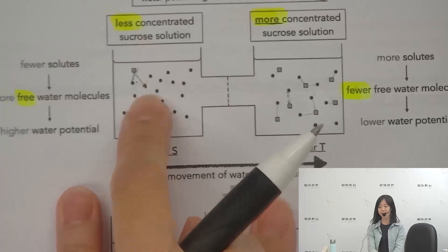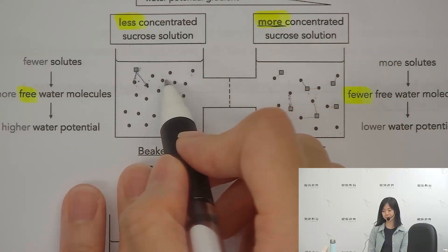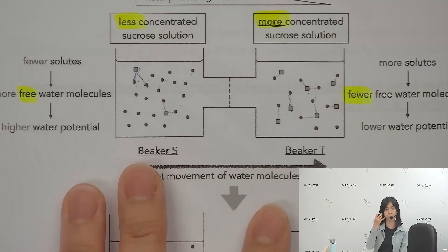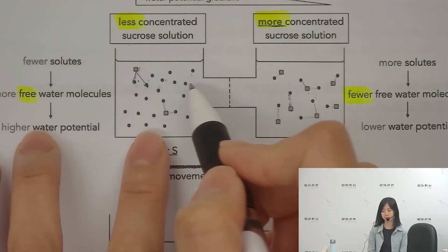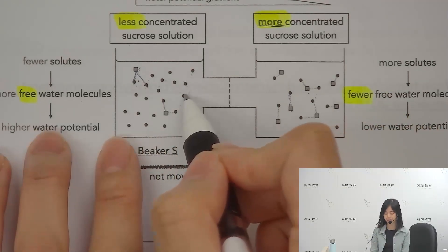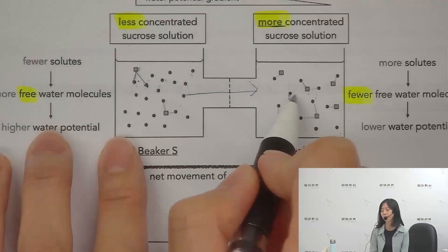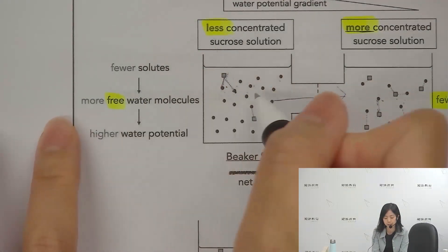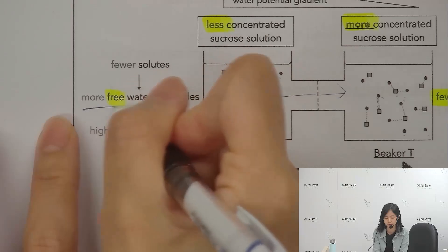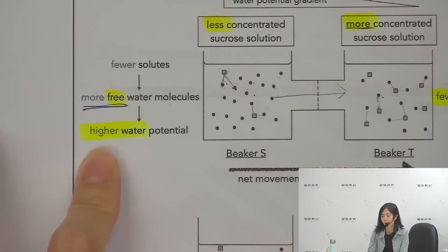You can see here there are so many free water molecules, so they will feel a tendency to move. When you have a lot of free water molecules, we say it has a higher water potential.